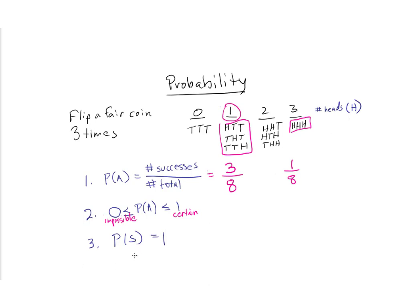The probability of S, where S represents our sample space, means that if I add up the probability of getting zero, one, two, or three heads on three flips, the sum must be one — it must be certain. Because I can't get negative one heads or four heads on three flips; there are no other possible outcomes. So the sum of those probabilities must equal one, which means I'm certain to get one of these events.